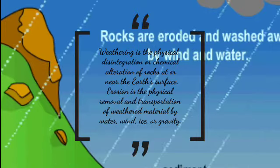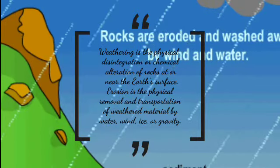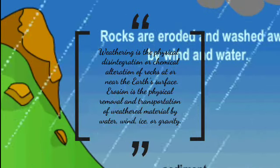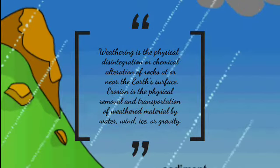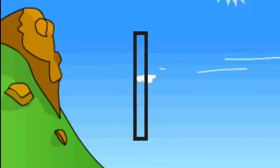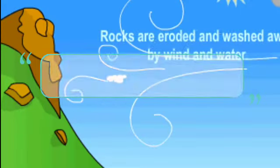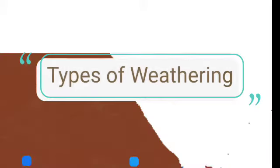Erosion is the physical removal and transportation of weathered material by water, wind, ice, or gravity. Types of weathering: 1.